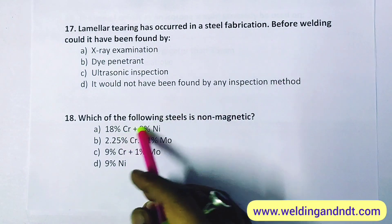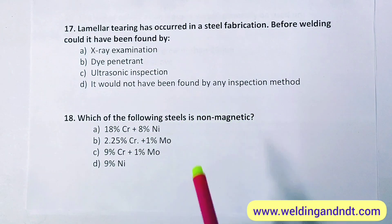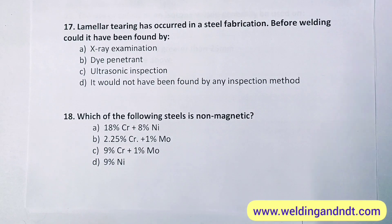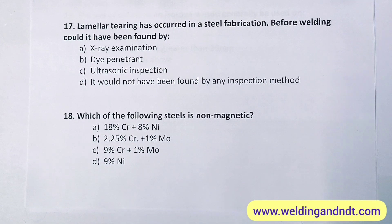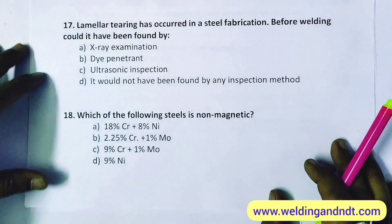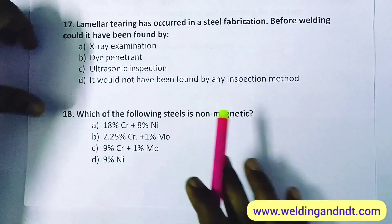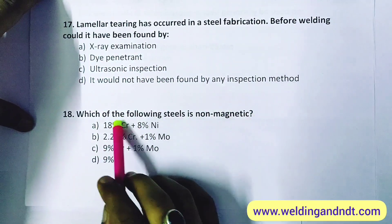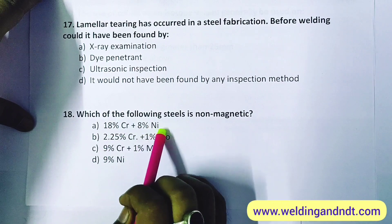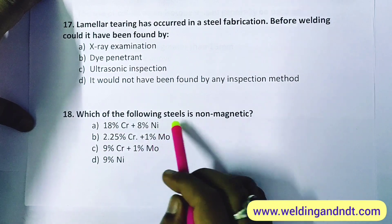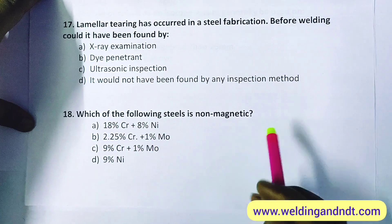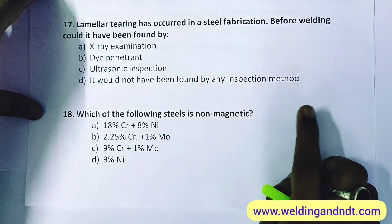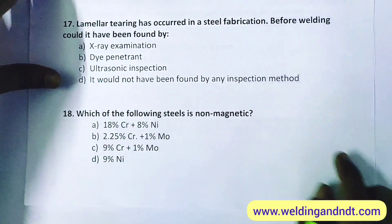Question 18: which of the following steels is non-magnetic? 18% chrome plus 8% nickel is nothing but austenitic stainless steel. Austenitic stainless steel is non-magnetic. The answer is A. The material section will cover this topic in more detail later.